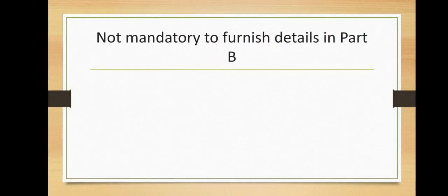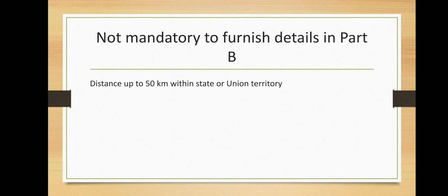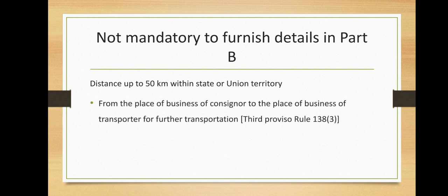When it is not mandatory to furnish the details of conveyance in Part B: Explanation 2 to Rule 138 clause 3 stipulates that an e-way bill is valid for the movement of goods by road only when the information in Part B is furnished. However, the details of the conveyance may not be furnished in Part B of the e-way bill where the goods are transported for a distance up to 50 km within the state or union territory, from the place of business of the consigner to the place of business of the transporter for further transportation, as per the third Proviso to Rule 138 clause 3, or from the place of business of the transporter finally to the place of business of the consignee, as per the Proviso to Rule 138 clause 5.